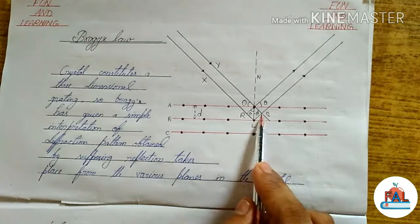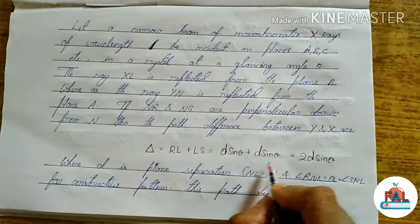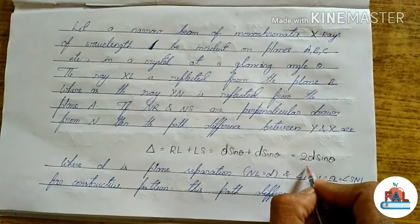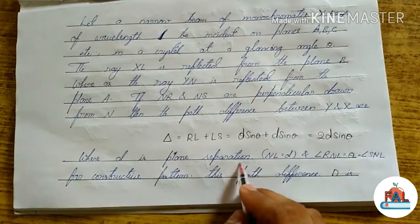So we add them and get the value 2D sin theta, where D is the plane separation.